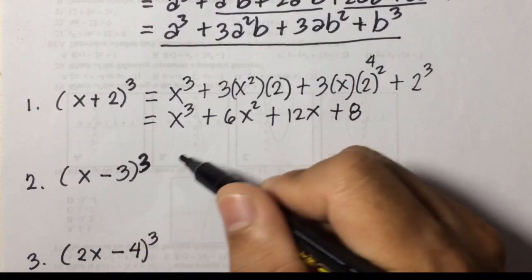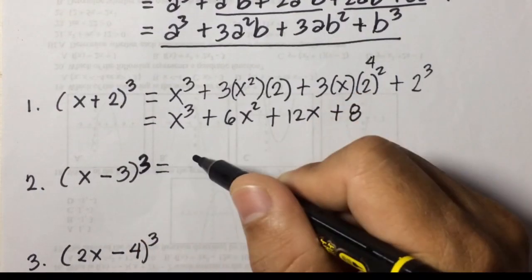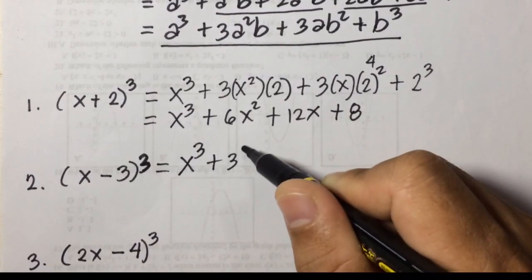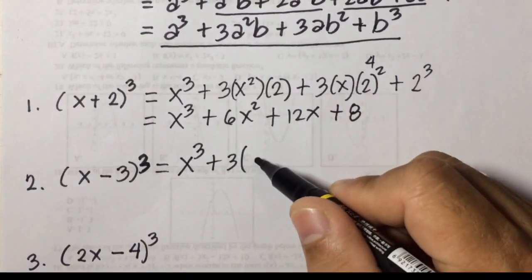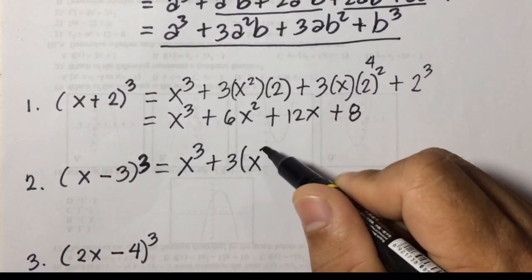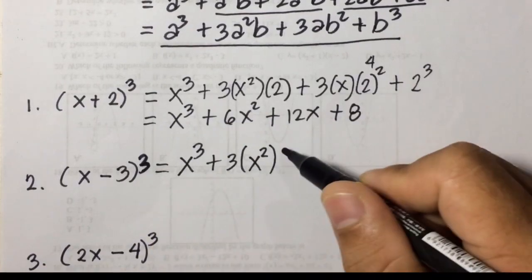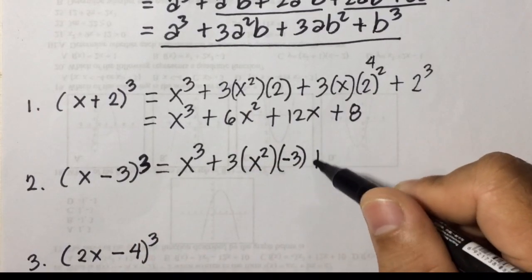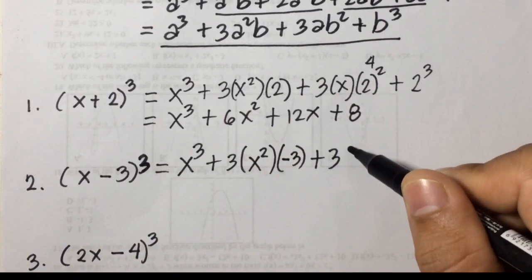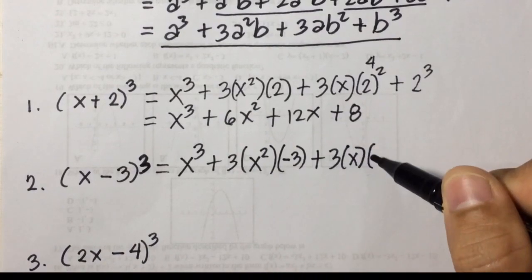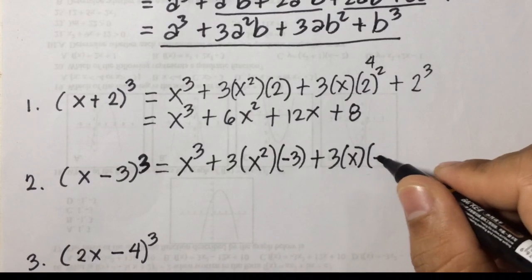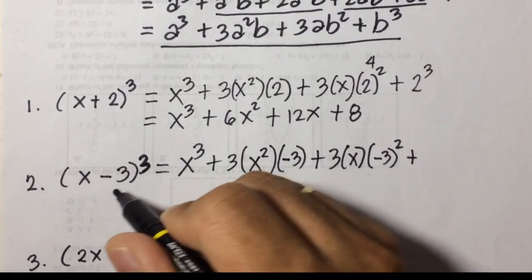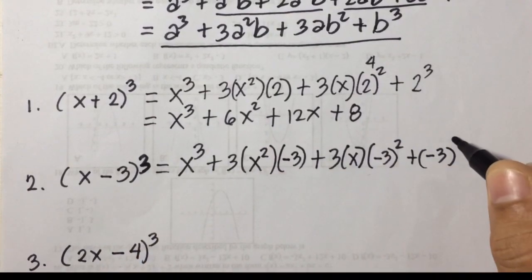Example number 2: quantity of x minus 3 cubed. The first term is the cube of x, so x cubed. The second term is plus 3 times x squared times the second term negative 3. The third term is plus 3 times x times the square of the second term, negative 3 squared. The last term is plus the cube of negative 3.